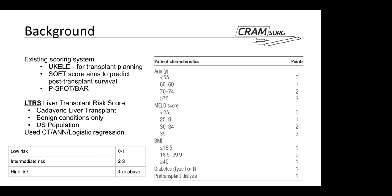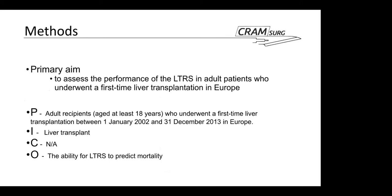The primary aim of this study was to assess the performance of the risk score in adult patients who had their first ever liver transplant in Europe. Using the PICO framework, the patient group was adult recipients who had their first liver transplant in Europe between January 2002 and December 2013. The intervention was having a liver transplant, and there is no comparison group. The outcome was to see the ability of the risk score to predict mortality post liver transplantation.